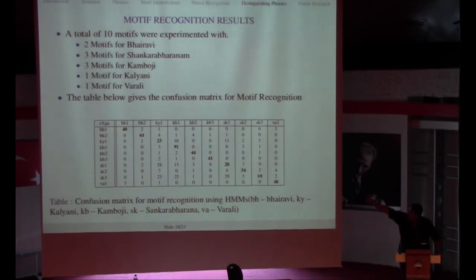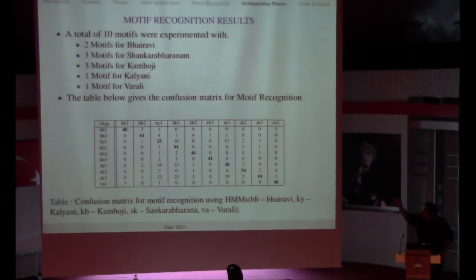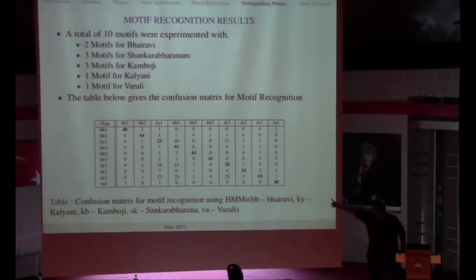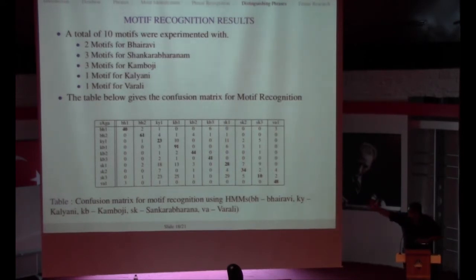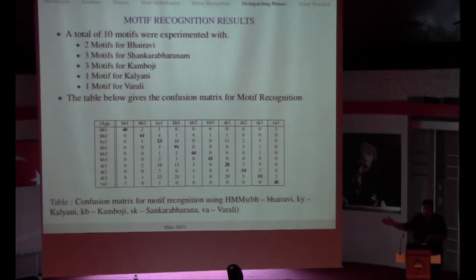As you can see we have chosen two different sets of phrases for a single Raga, and even then the machine distinguishes between those two phrases. Most phrases of Bhairavi phrase 1 have been classified into Bhairavi phrase 1, and most examples of Bhairavi phrase 2 have been classified in Bhairavi phrase 2, and accordingly for Kambhoji and Varali. The only confusion is between Kalyani and Shankarabharanam because the Ragas are pretty similar, and between the first phrase and third phrase of Shankarabharanam. So there is an order even in the confusion that's happening, which is pretty interesting.